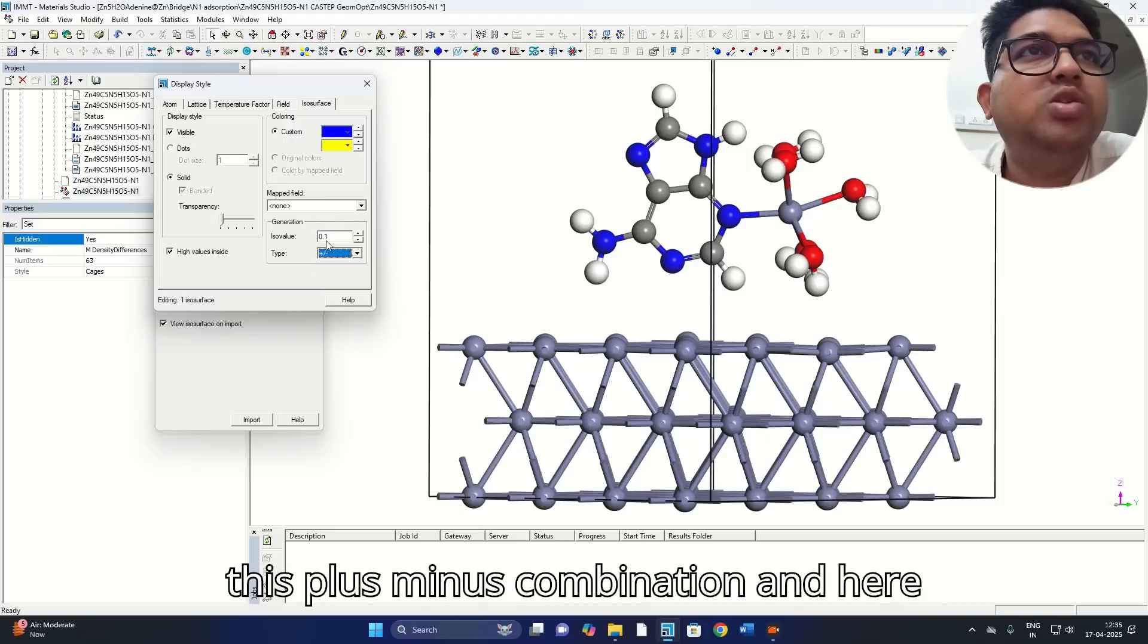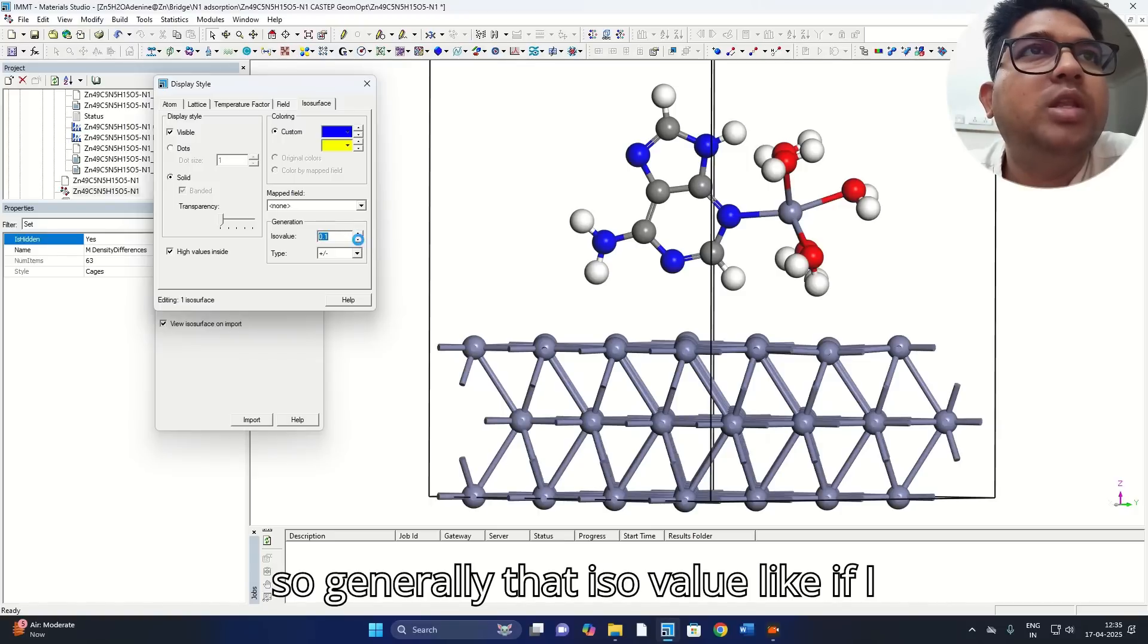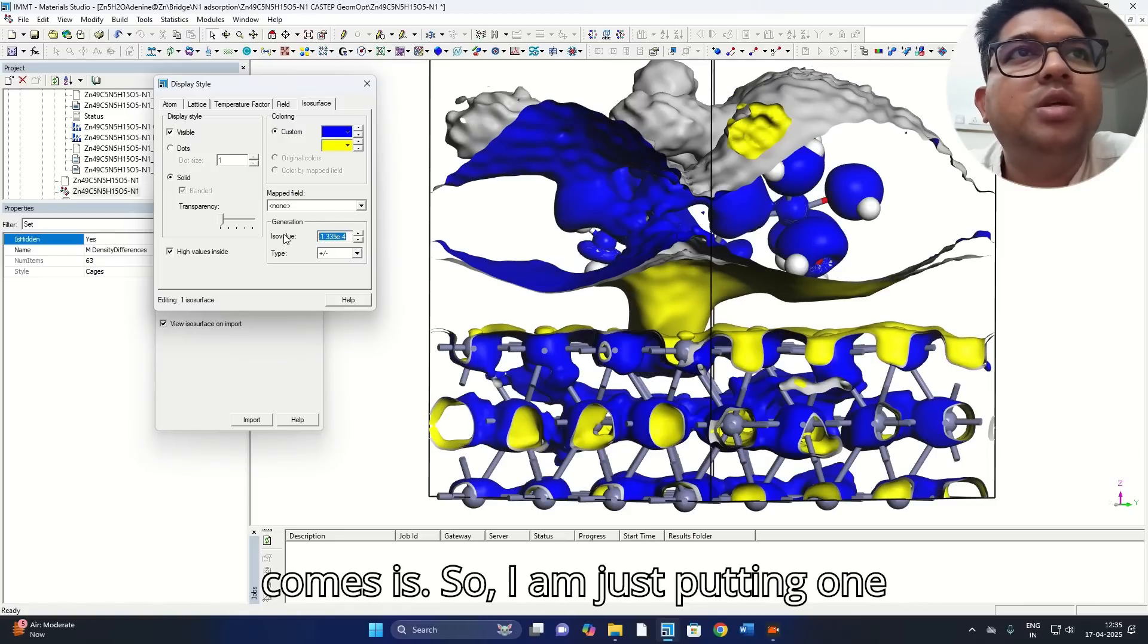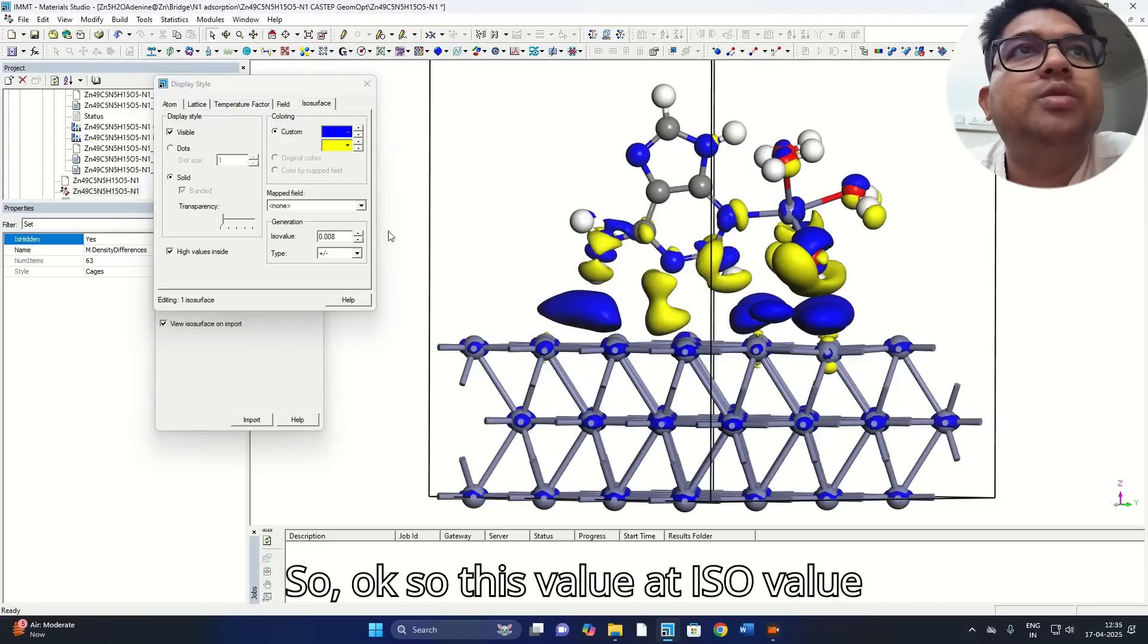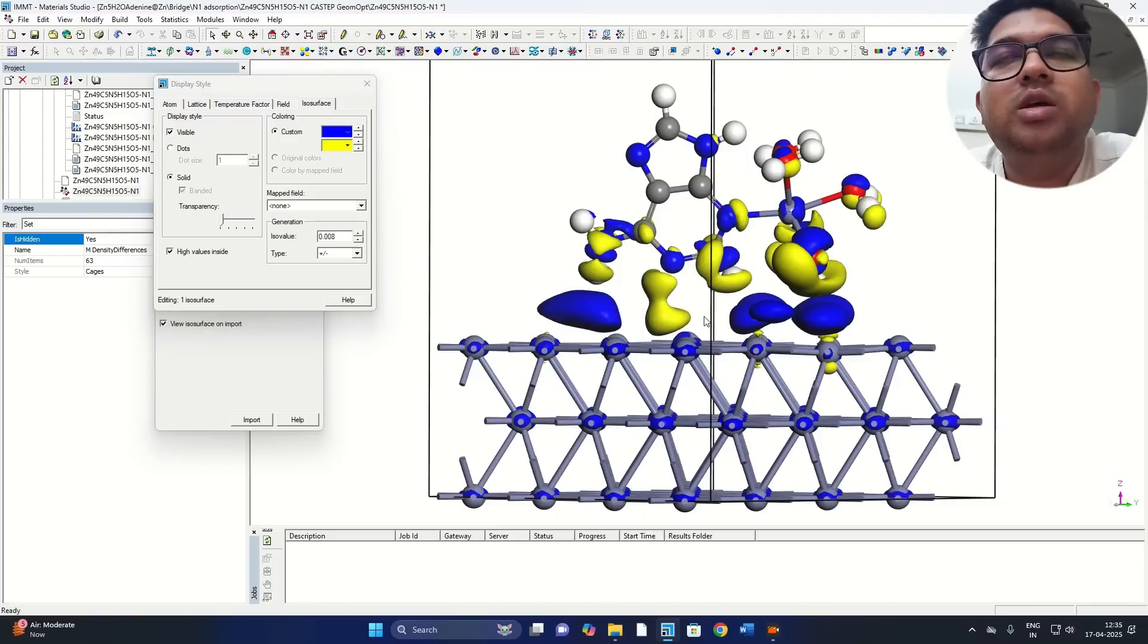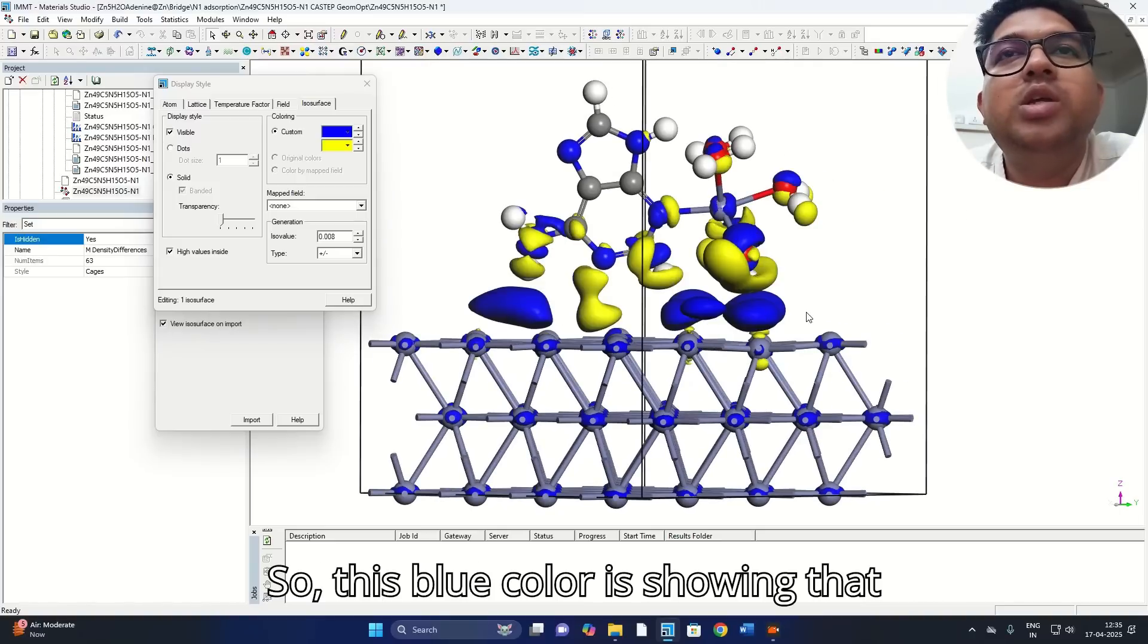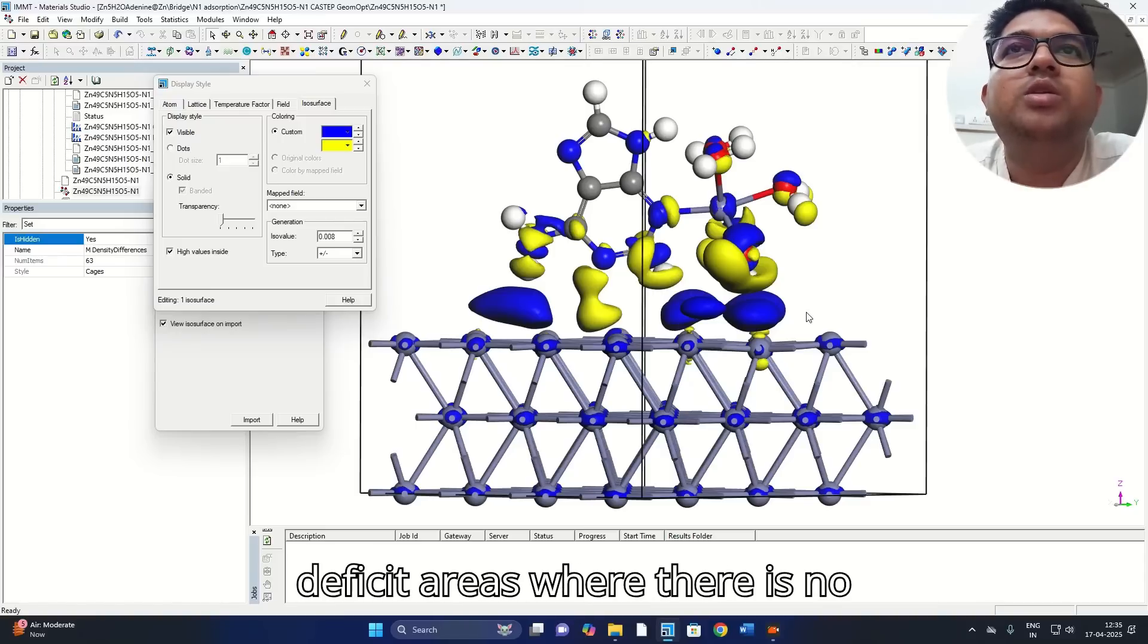Sometime, so first we'll take this plus minus combination and here the iso value we need to select here. Generally, if I am decreasing, see how it comes. I'm just putting one random number here. So this value at iso value 0.008, you can see the surfaces are clearly visible here.